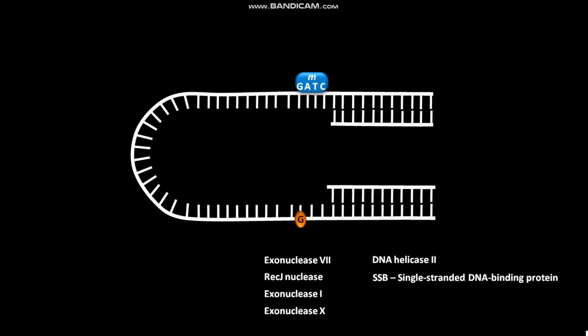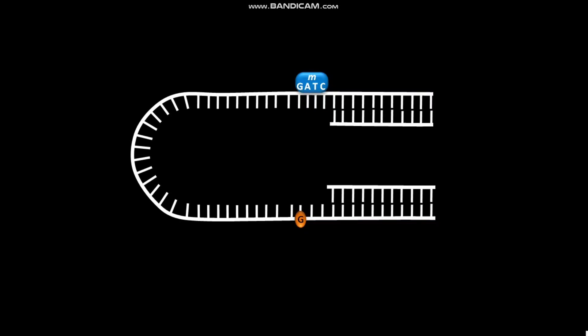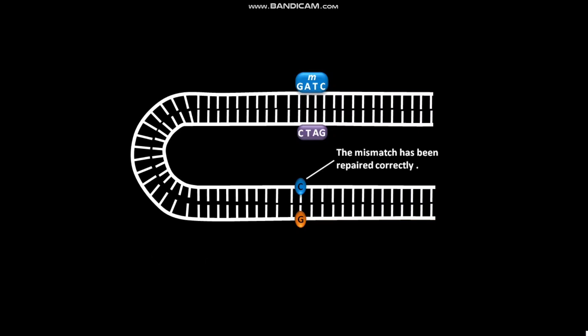This gap is filled by DNA polymerase III and then the nick is sealed by DNA ligase. As a result, the mismatch is replaced with the correct base pair as indicated by the older or original strand. The exonuclease that is used depends on the location of the cleavage site relative to the mismatch.